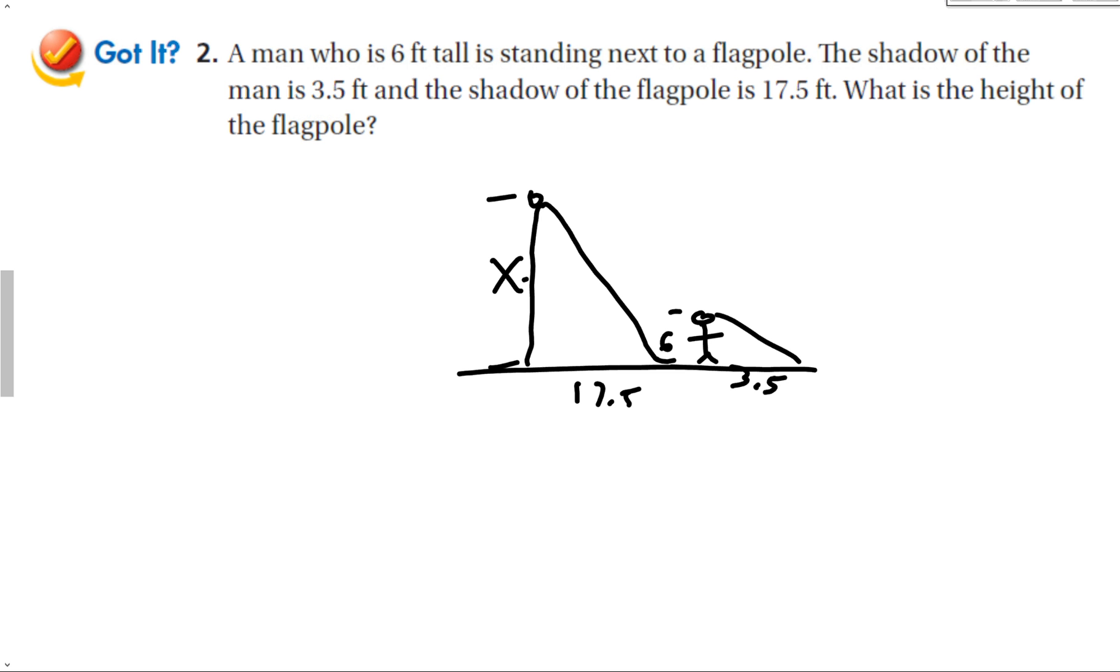Let's set up our proportion. We want X over 6, height of the flagpole over height of the guy, equals 17.5 over 3.5. So that's 3.5X. It's okay to get decimals. 17.5 times 6 gives me 105. Divide out the 3.5, and we get 30 feet. Does your answer make sense? Yeah, looks like it. The height of the flagpole is going to be a little bit bigger, because the guy is bigger than his shadow. So my answer makes sense.